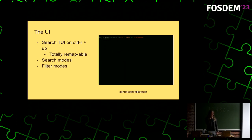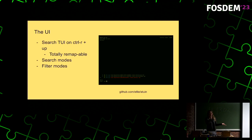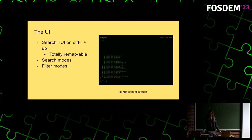We also have several different filter modes. Atuin allows you to search your shell history for the current session, for the current directory, for the current machine, or just all of your shell history for every machine you've ever connected.